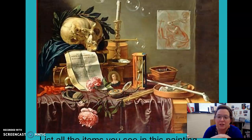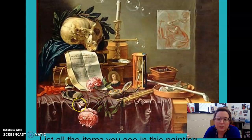First thing I see is the hourglass. Then I see a skull and on the skull is this greenery halo crown thing. I see the flowers. I see this mirror. There's of course a stack of books. This letter or document — it might even be money, I'm not sure.